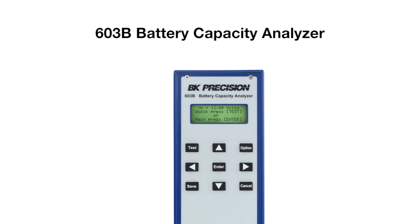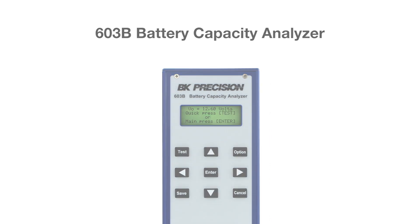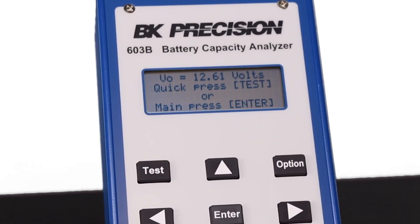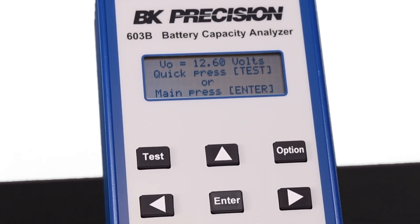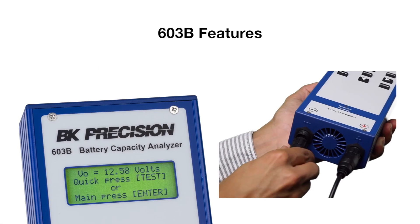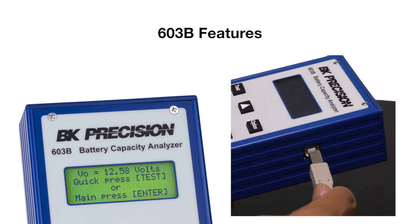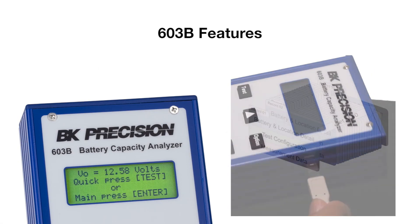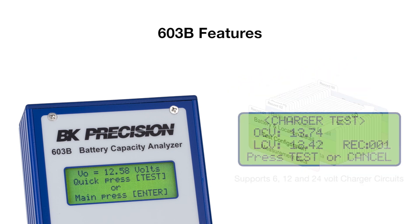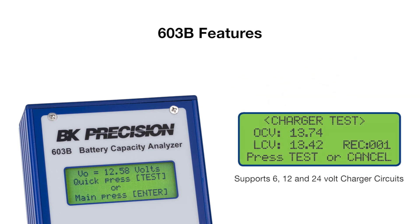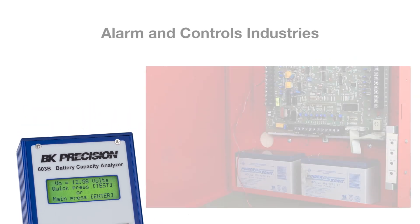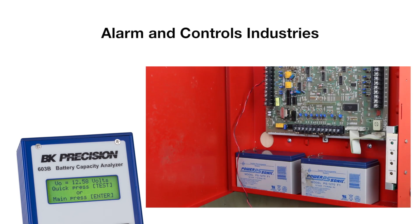The 603B retains the fast test time and adds several new features like enhanced accuracy, removable cables, computer connectivity, internal memory storage, charger circuit testing, and more. The 603B analyzer is designed to evaluate batteries and charger circuits used in the alarms and controls industry.